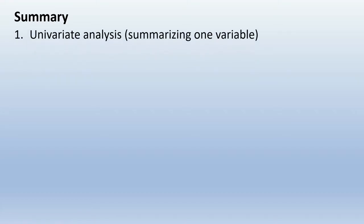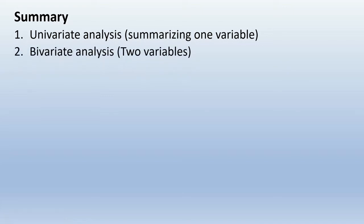To summarize: univariate analysis means summarizing one variable, either by spread or by central tendency. By central tendency we use the mean, mode, and median. By spread — how our data is spread from the smallest to the largest — we use the range, or to see how our data deviates from the mean, we use the standard deviation.